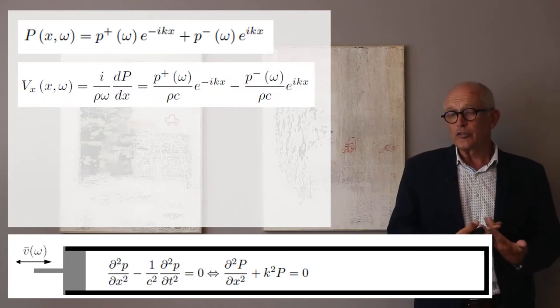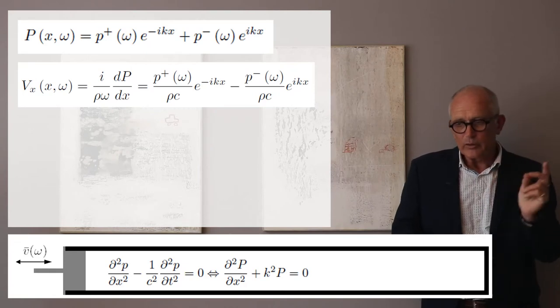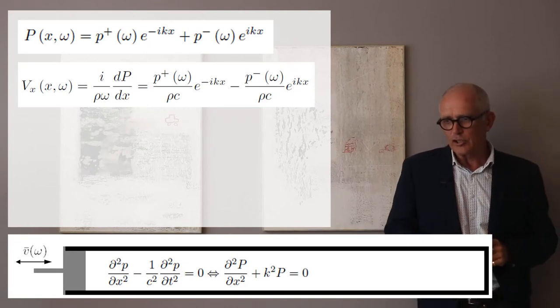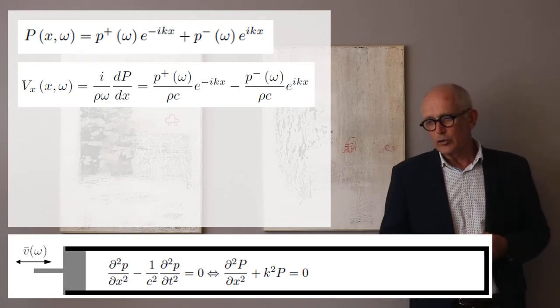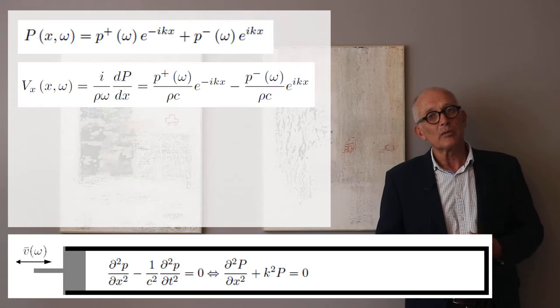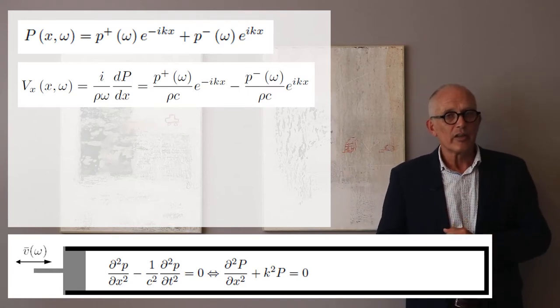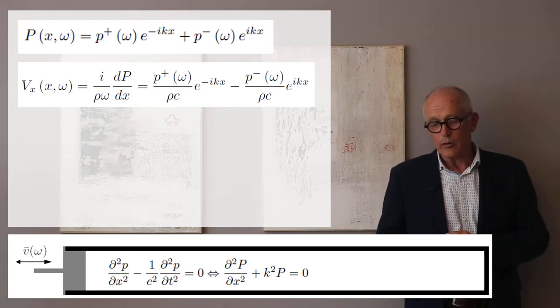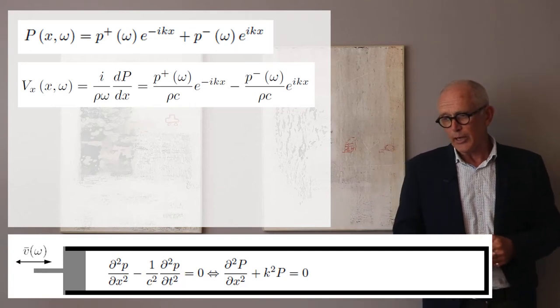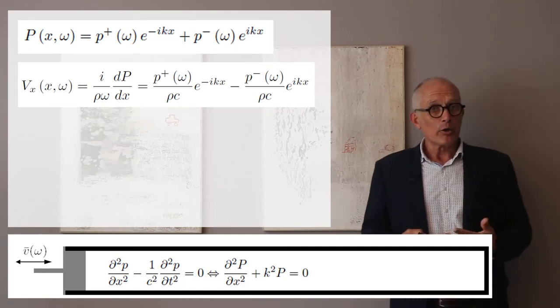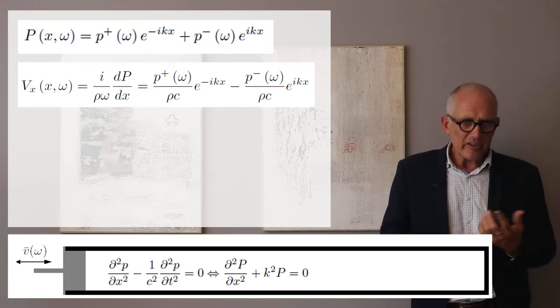Using Euler's equation, which we've seen before, I can calculate the velocity spectrum of the velocity oscillation in the acoustic fluid. The velocity in the x-direction is obtained by taking i divided by rho omega times the pressure gradient in the x-direction, which gives me p plus over rho c exponential minus ikx minus p minus over rho c exponential plus ikx.